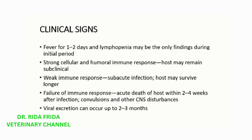In case of weak immune response, subacute infection is seen. In this scenario, the host may survive longer. If the immune system fails to respond, acute death of the host within 2-4 weeks after infection is seen. In this case, convulsions and other CNS disturbances are also observed. Viral excretion can occur up to 2-3 months.